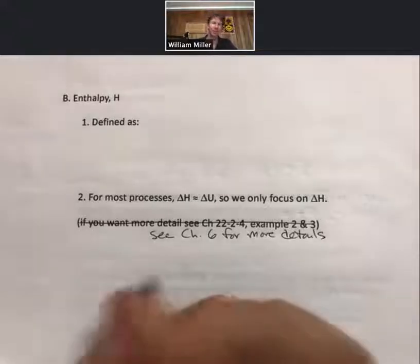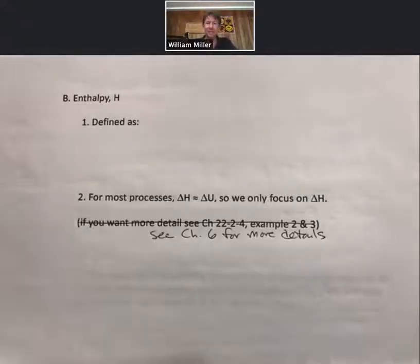Now let's pick up talking about something called enthalpy, and the symbol for enthalpy is H, whereas the symbol for internal energy was U. And we learned a couple things about internal energy previously by talking about U.